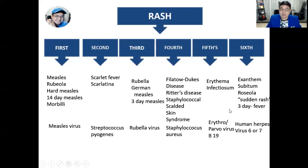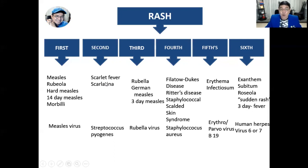Note the difference: three-day measles is the third disease, and three-day fever is the sixth disease. But for this video, we're going to talk about scarlet fever, or scarlatina — the second disease.